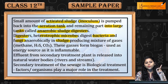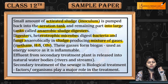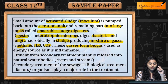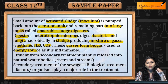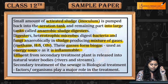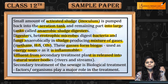In Sludge, Heterotrophic Microbes जो produce करते हैं Mixture of Gases — Methane, H2S, CO2 — जो की Biogas है. ये Gases Biogas बनाती हैं, which are used as Energy Source because it is inflammable. Effluent from secondary treatment plant is released into natural water bodies.